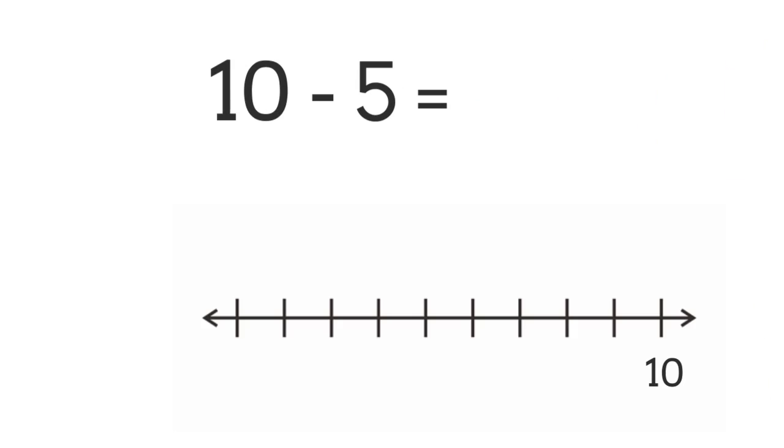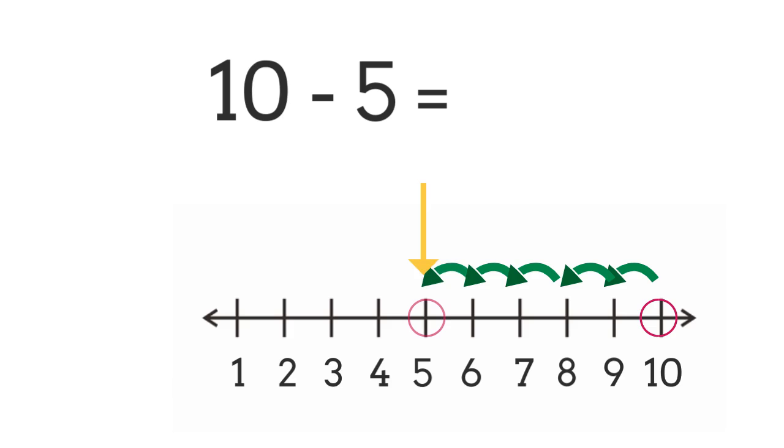I have one example for you: ten take away five. Yes, start with the number line. Ten, from number ten, going backwards five times. Perfect, you landed at number five. Great! So ten take away five equals five. Great job everyone.